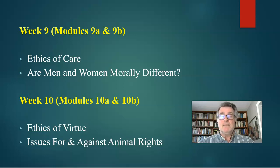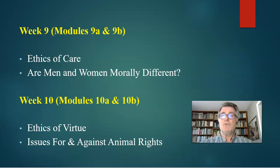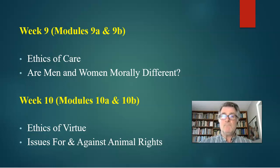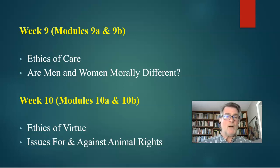Week nine, we talk about ethics of care — the idea proposed by Carol Gilligan in studying the moral differences between men and women — and it will follow up with: are men and women morally different? Are they so different they cannot even speak to each other about moral issues? Of course they can — but what makes men and women morally different is still worth pursuing. Week ten, we look at ethics of virtue — Aristotle's idea of virtuous behavior — and how the midpoint between excess and deficiency constitutes a good citizen. Then we'll look at issues for and against animal rights, because that's a really good example of virtuous behavior — if you're kind to individuals, why not extend that to animals?